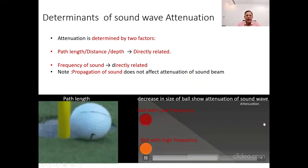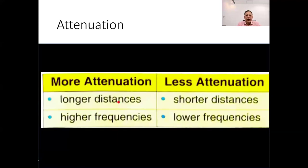To understand, it is similar to how high-pitched sounds weaken faster than low-pitched ones. It's like how a high-pitched whistle fades faster than a low, deep sound. In summary, longer distances and higher frequencies result in greater attenuation, while shorter distances and lower frequencies result in less attenuation. The unit of attenuation is decibel.